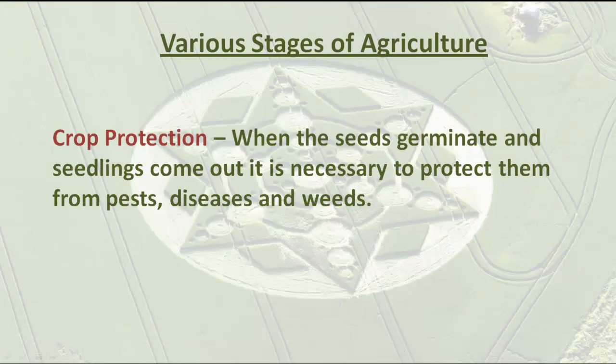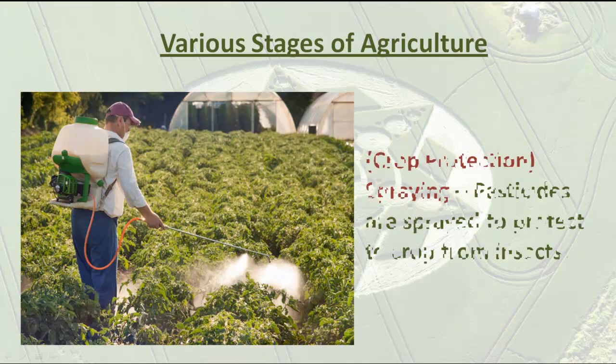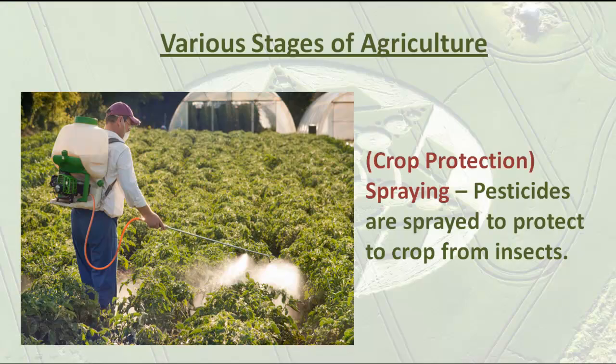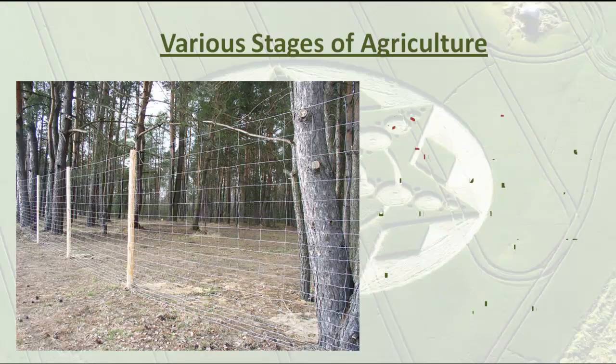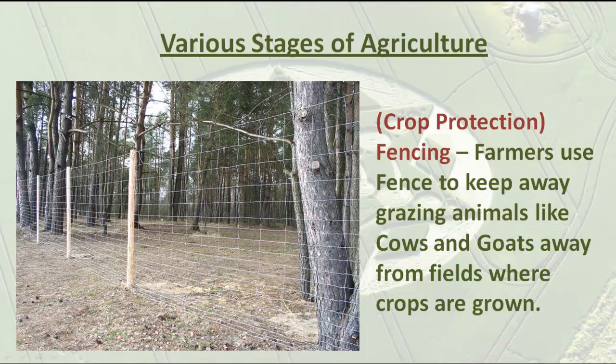When the seeds germinate and the seedlings come out, it is necessary to protect them from pests, diseases, and weeds. Pesticides are sprayed to protect the crop from insects. Farmers use a scarecrow to scare birds away from fields where crops are grown.